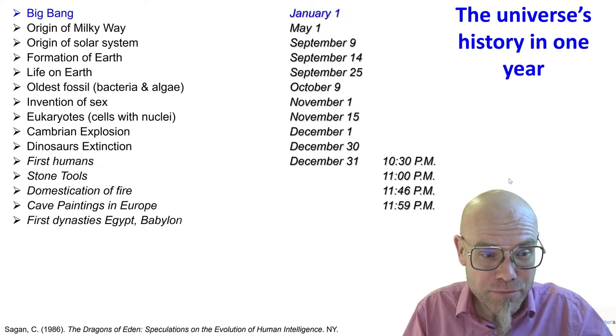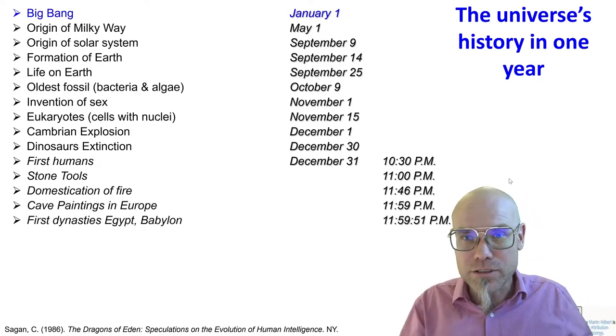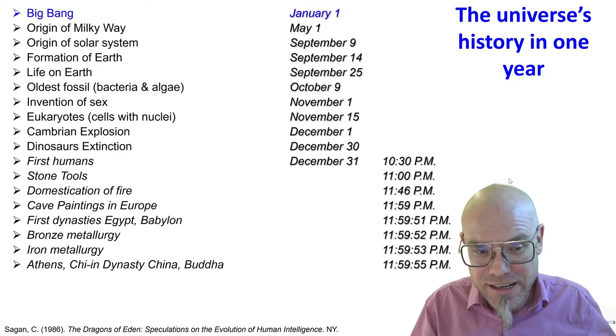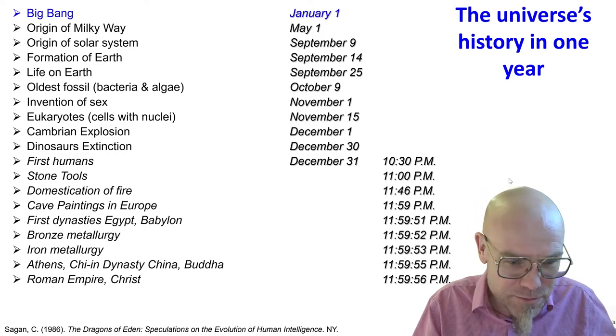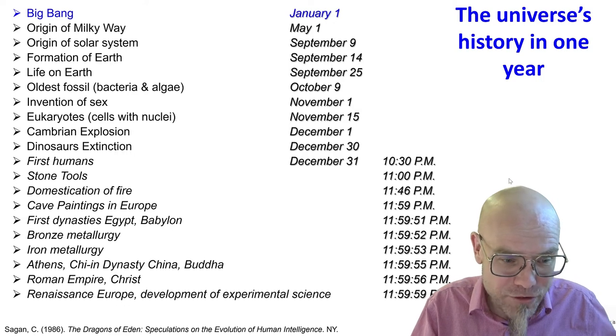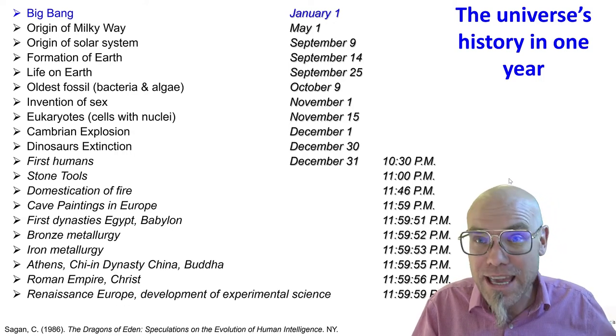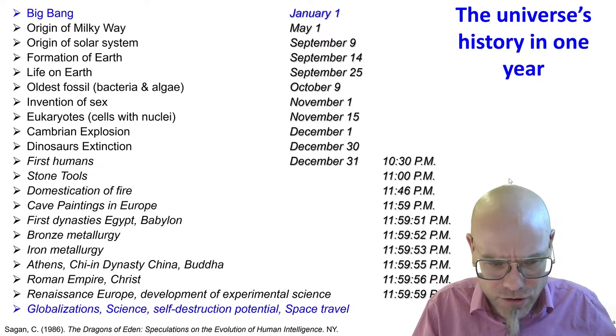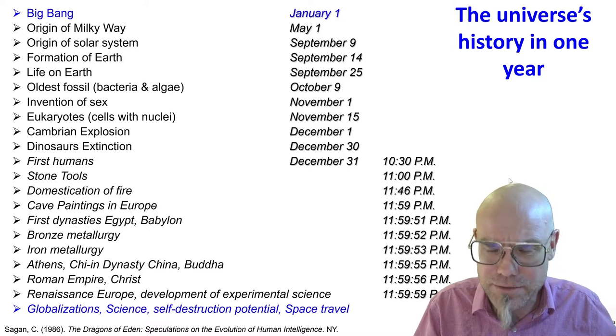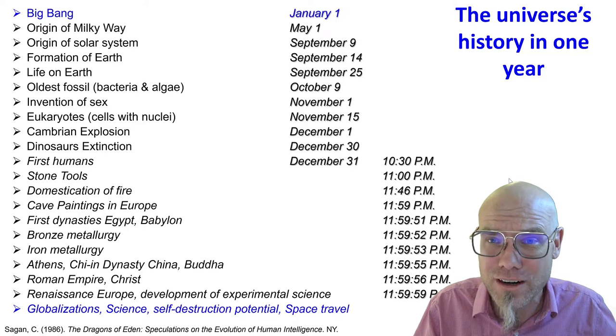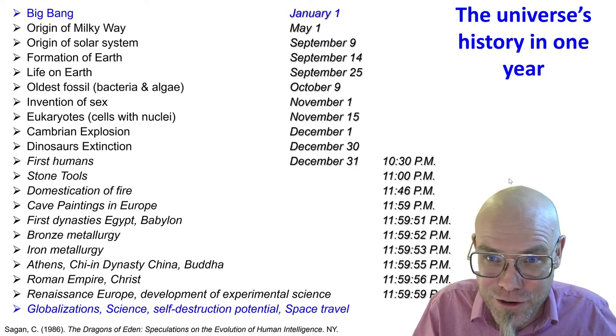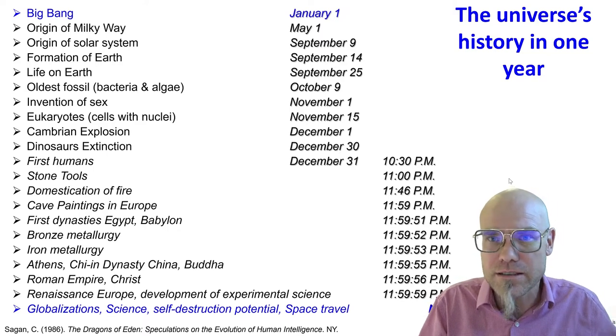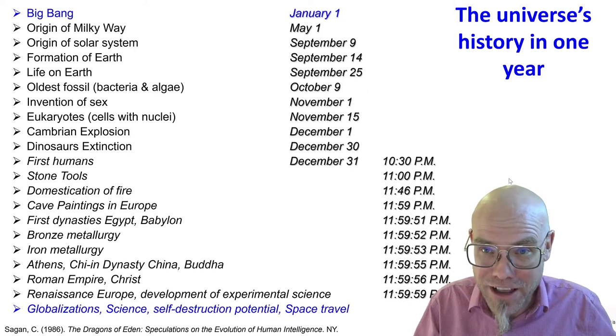Domestication of fire, cave paintings, first dynasties when we created our civilizations, bronze metallurgy, iron, Athens, the Qin dynasty in China, and the Buddha, that was five seconds before midnight. The Roman Empire, four seconds before midnight. The Renaissance, the Age of Enlightenment, experimental science, that's a second before midnight. And globalization, the rest of science, the self-destruction potential, space travel, and all the other rest.